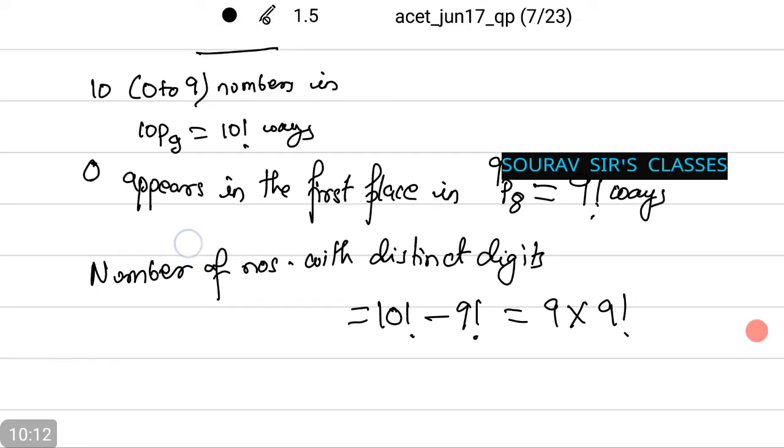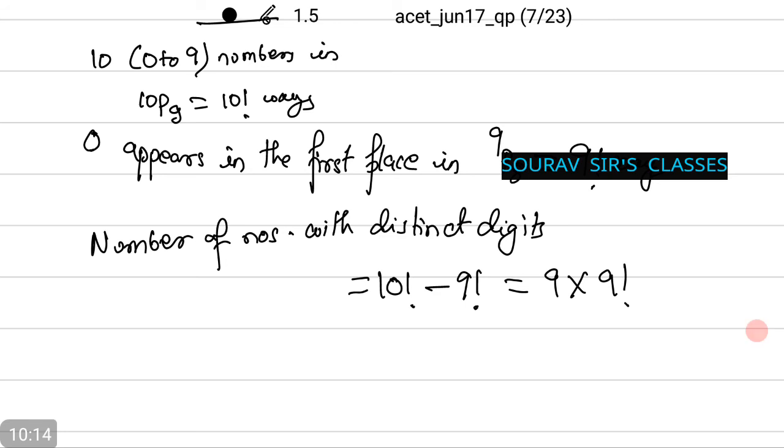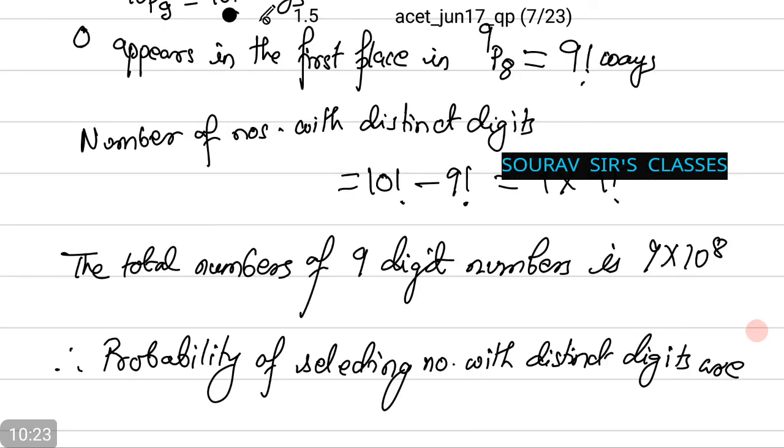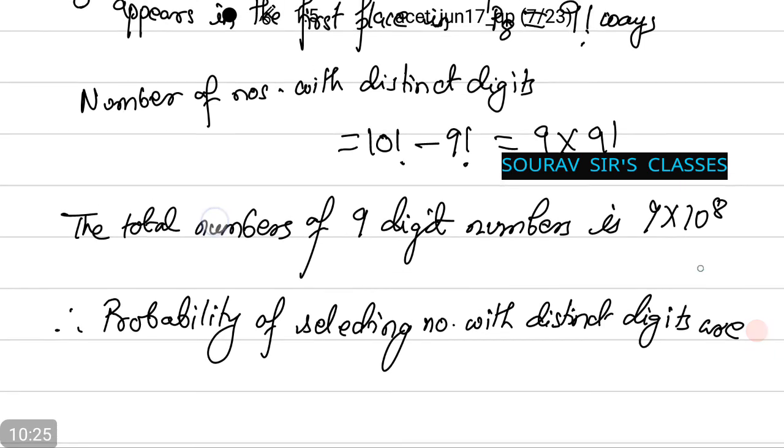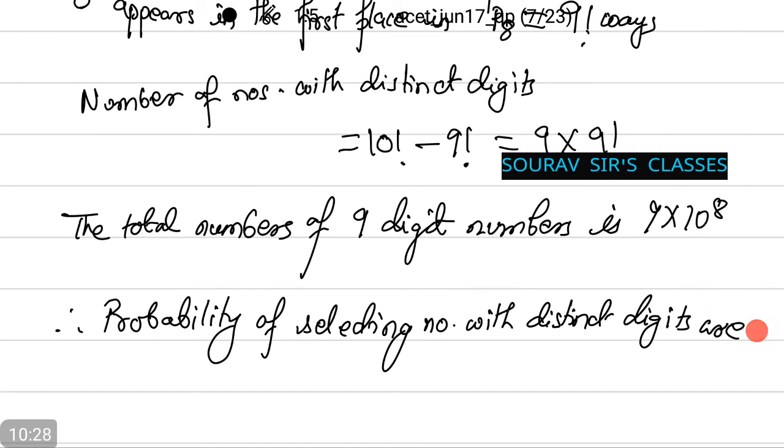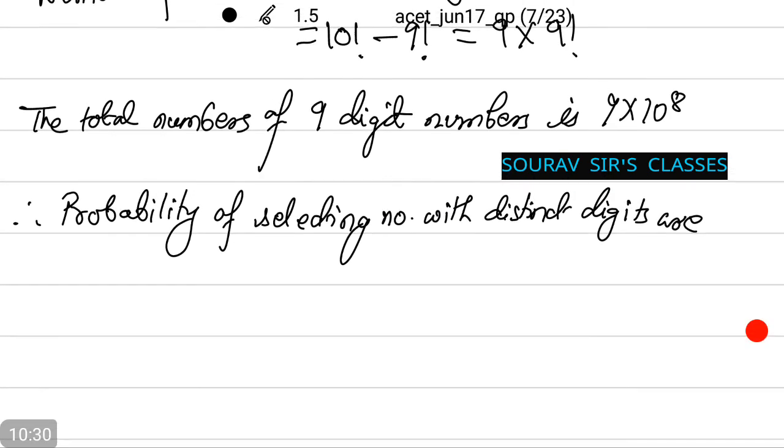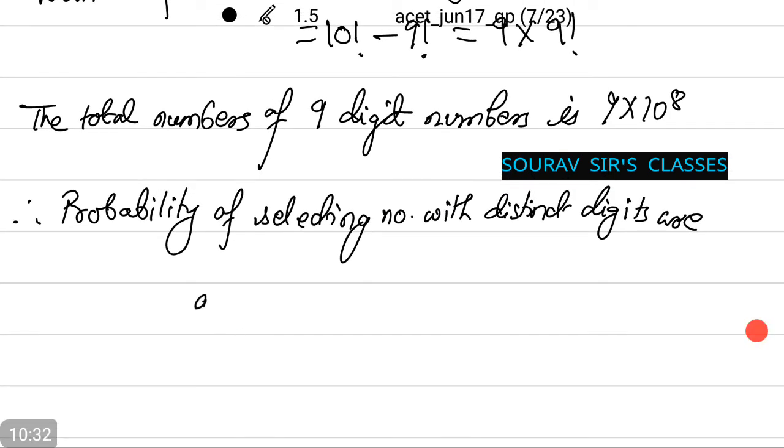Thus, the total number of 9 digit numbers is 9 into 10 to power 8. Now, the probability of selecting number with distinct digits are 9 into 9 factorial that we obtained earlier, divided by 9 into 10 to power 8, which is nothing but 9 factorial by 10 to power 8.